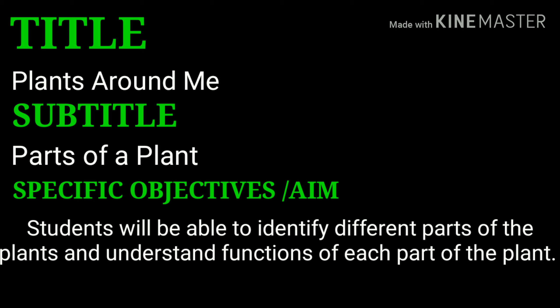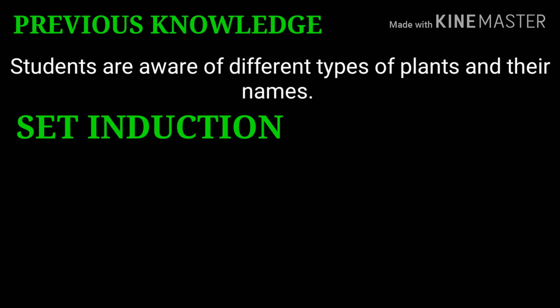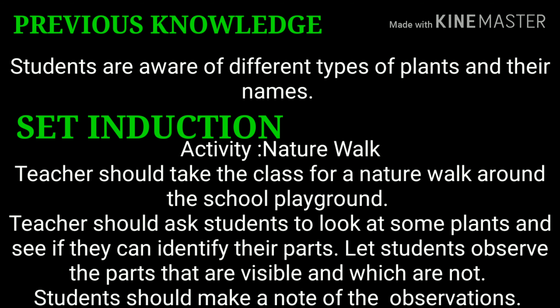To begin with, you have to write the title 'Plants Around Me,' subtitle 'Parts of a Plant,' then specific objectives or aim. Here, students will be able to identify the different parts of the plants and understand the functions of each part. Then comes the previous knowledge: students are aware of the different types of plants and their names.